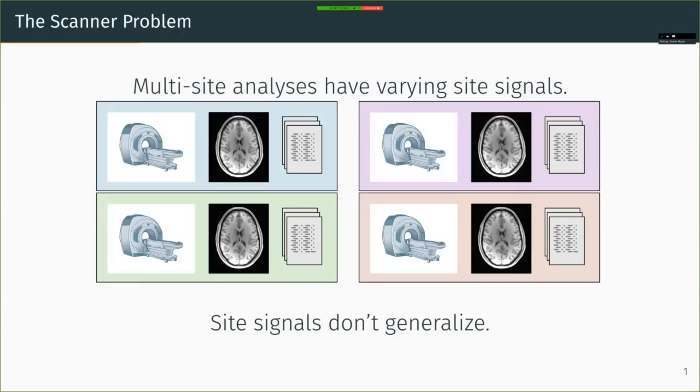Multi-site analyses have multi-site biases, and site signals don't generalize. So that means if your prediction method learns such a site bias, then you're necessarily losing test accuracy on new and unseen sites.